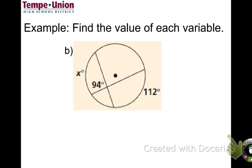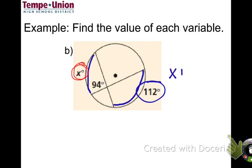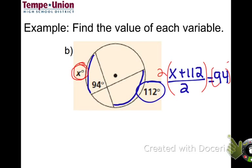Next example: we have two arcs intercepted by the chords. We add the two arcs and divide by 2, setting it equal to 94. So the equation is (x + 112) / 2 = 94. Multiplying both sides by 2 gives x + 112 = 188.